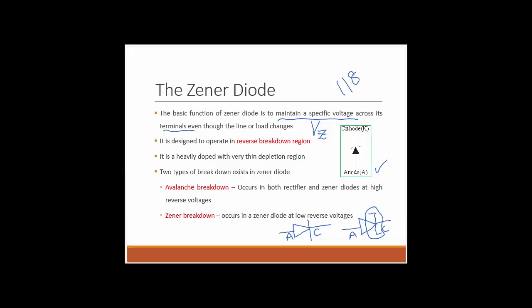The Zener diode is designed to only operate in the reverse bias — that's the main major difference between a normal diode versus a Zener diode. A normal diode's intended operation is in the forward region, whereas a Zener diode's intended operation is in the reverse region. When the Zener diode is in reverse bias it can maintain a specific voltage across its terminals. Again, refer to page 118 from your textbook to look at various types of Zener diodes.